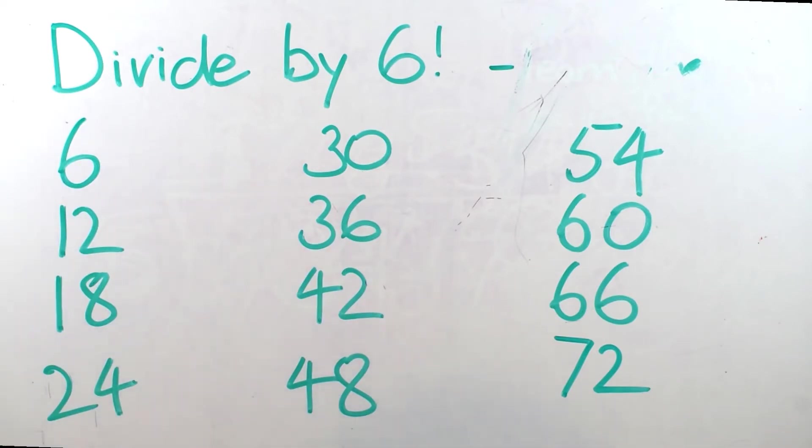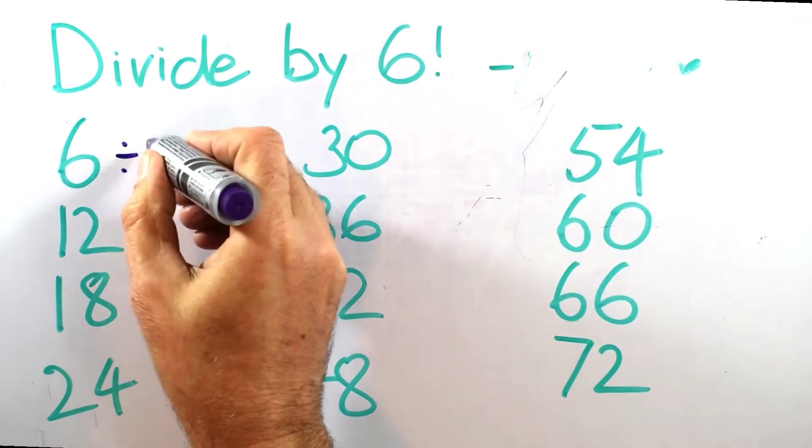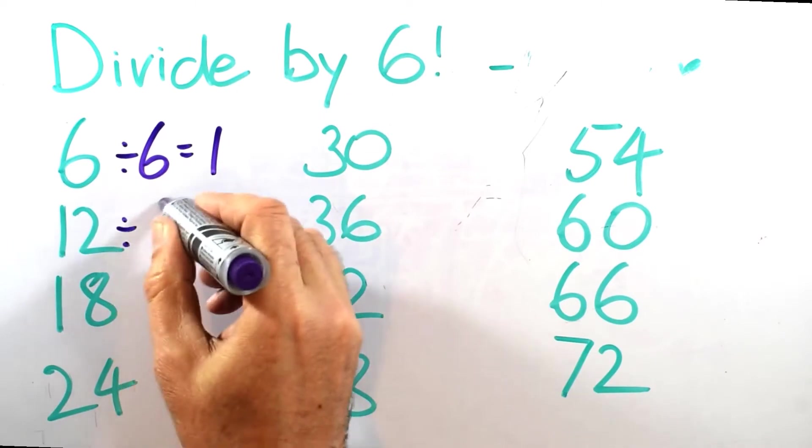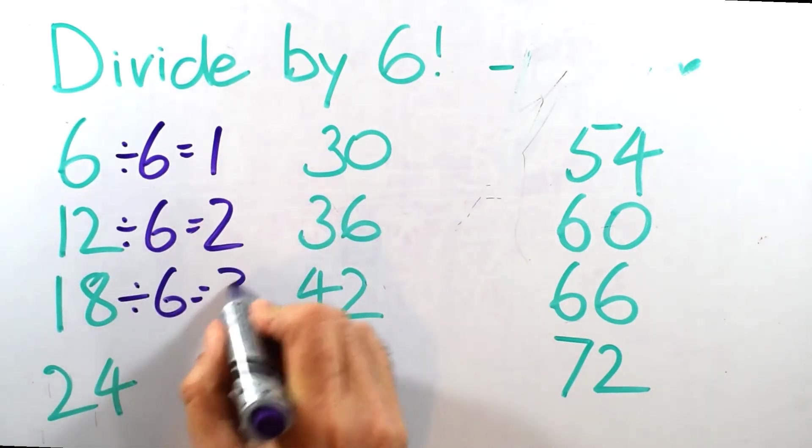Now, in a way we've got our answers. So we've skip counted 12 times up to 72. Now, we just fill in our answers. So we say, well, 6 divided by 6 equals 1. 12 divided by 6 equals 2. Same sort of pattern that you might have seen before. 18 divided by 6 equals 3.